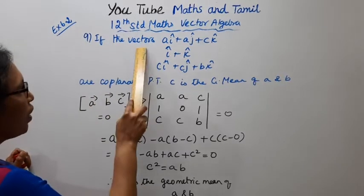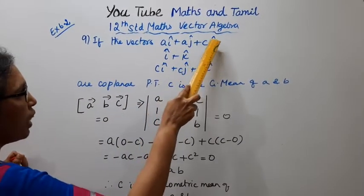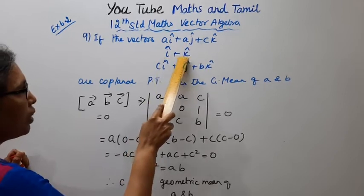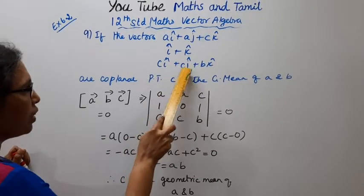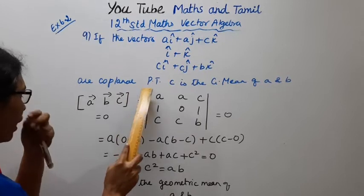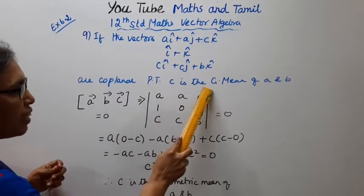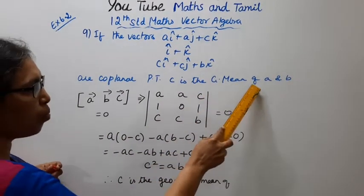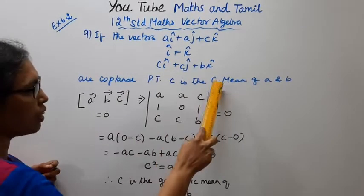If the vectors a i-cap plus a j-cap plus c k-cap, i-cap plus k-cap, and c i-cap plus c j-cap plus b k-cap are coplanar, prove that c is the geometric mean of a and b.